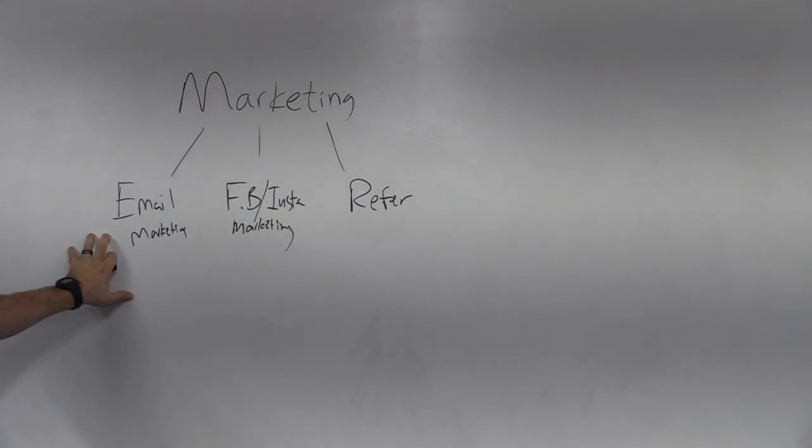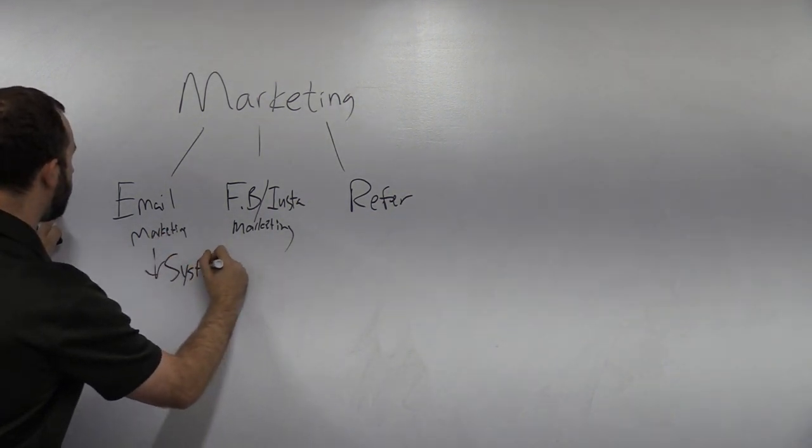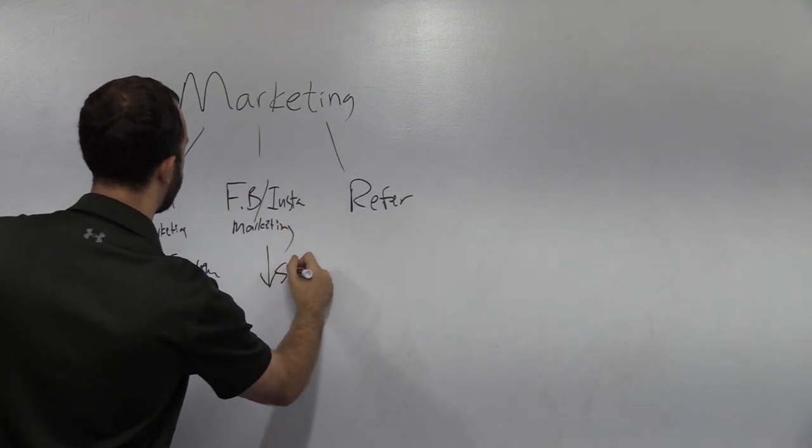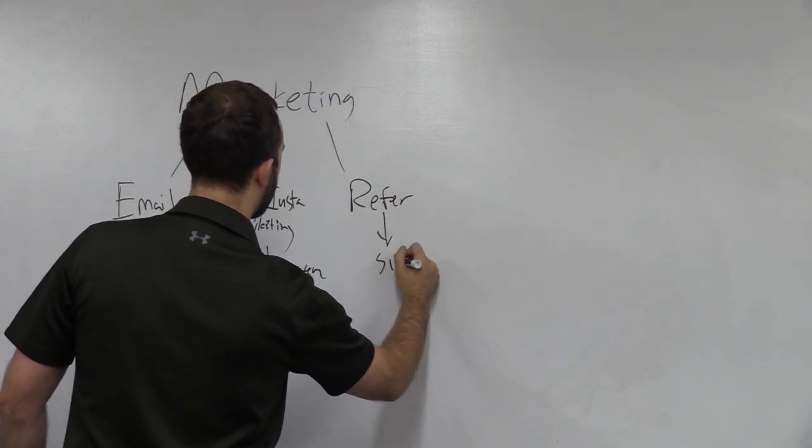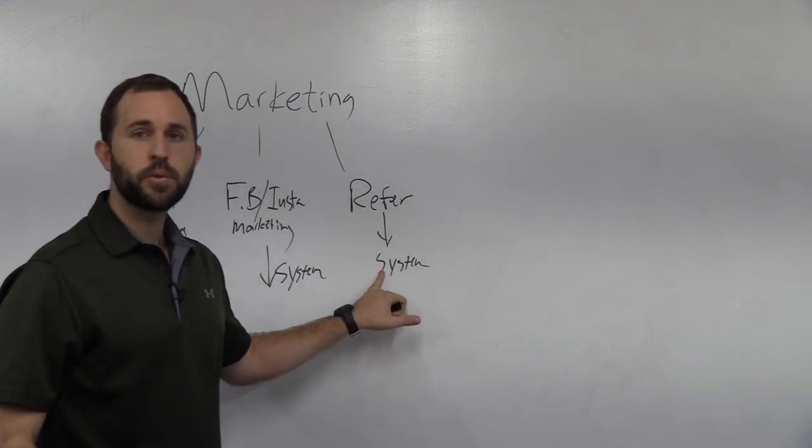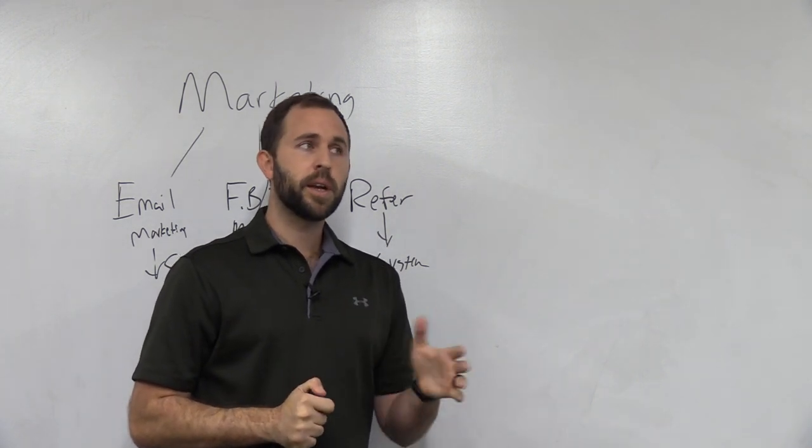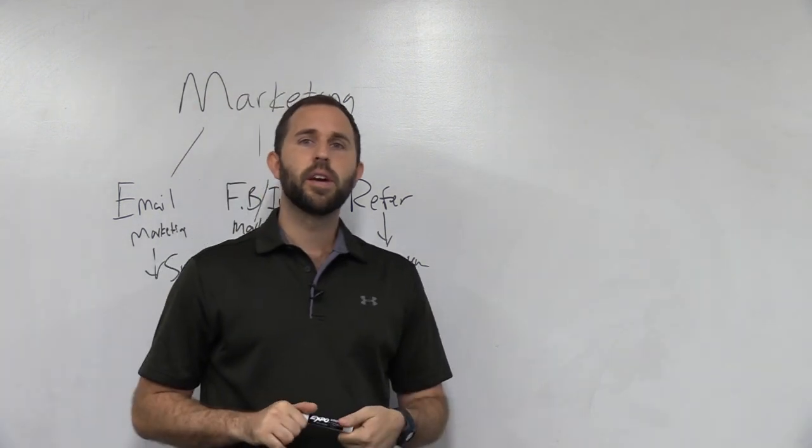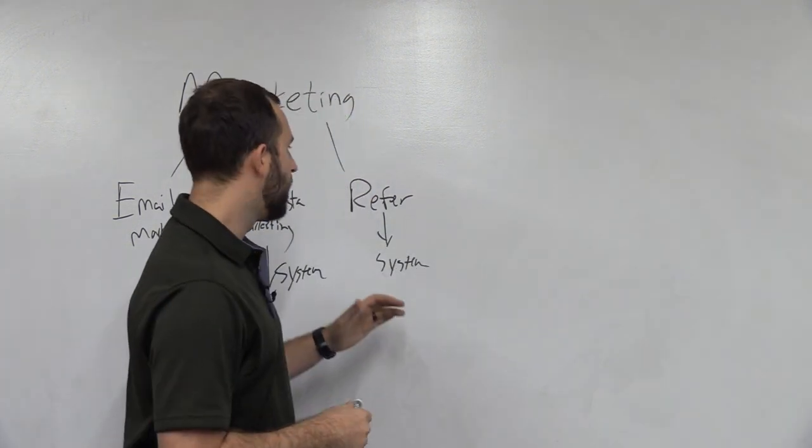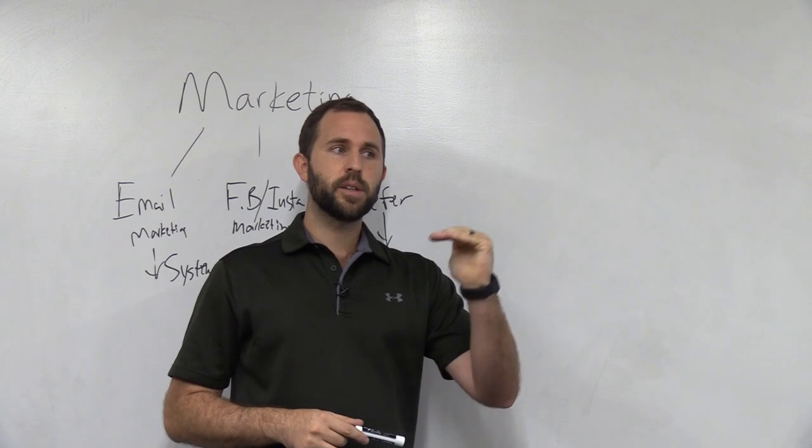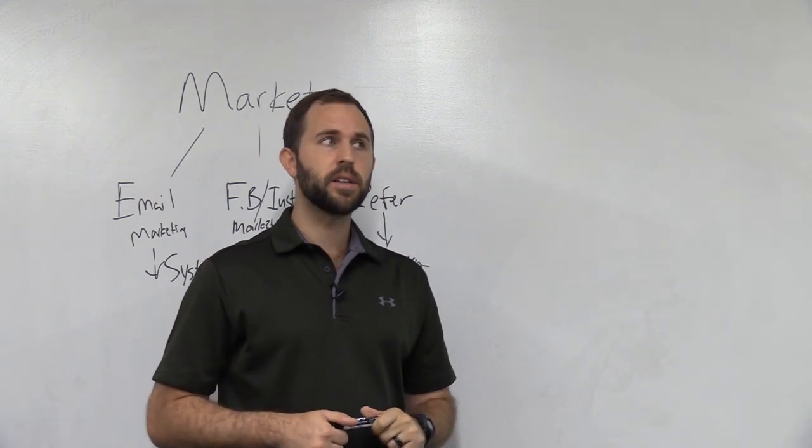Now the last one here is referrals. So if we have emails in place and we turn this into a system, we have videos in place, turn that into a system, we have referrals in place, we turn that into a system. Here's a great way to systemize your referrals: it's every 30 days after you sign up a new player in your program, new client, you go to their parents and you ask for the referral. Very simple. Every 30 days after they start your program. This means every time you add a new client, 30 days later you are talking to their parents about adding more players in your program.